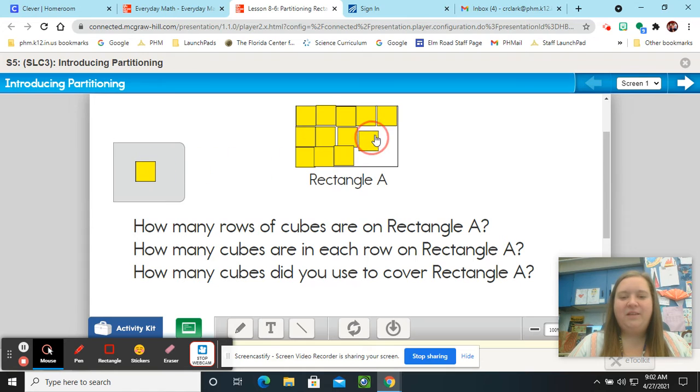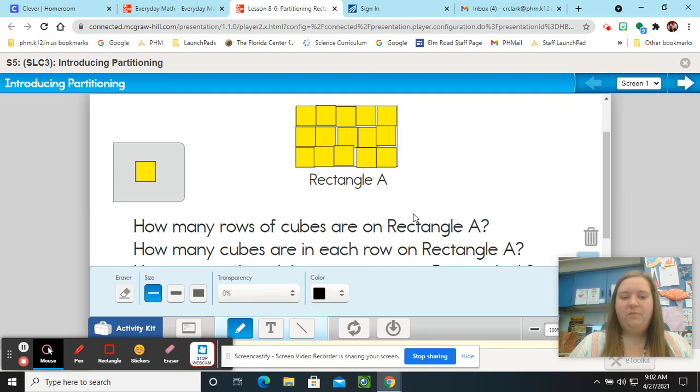So let's look at the first question. How many rows of cubes are on rectangle A? How many rows? Remember rows go across the page. So let's count the rows. We've got 1, we've got 2, and we've got 3. So we have 3 rows going across rectangle A.